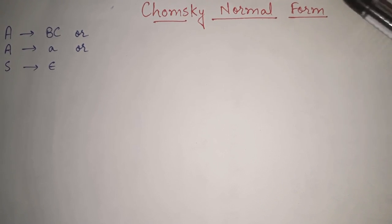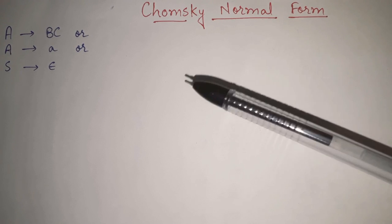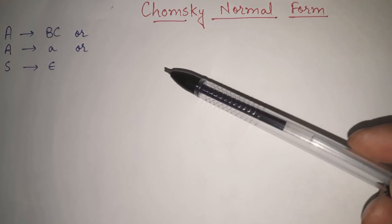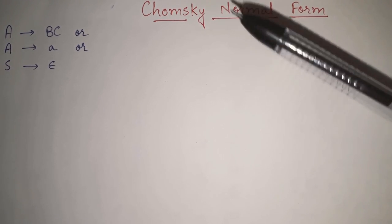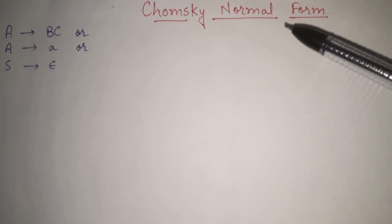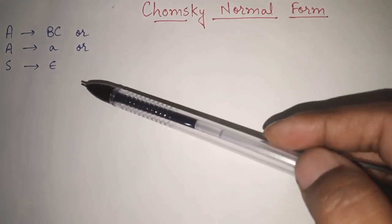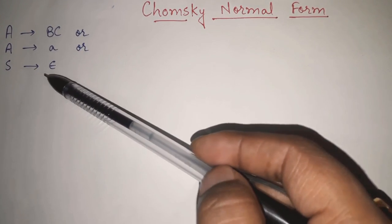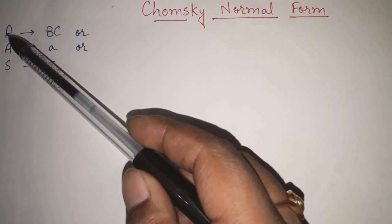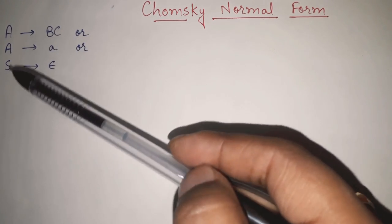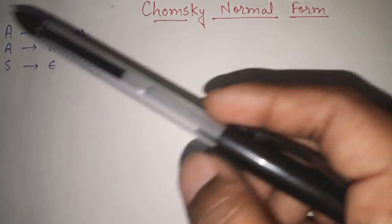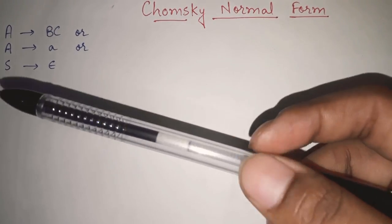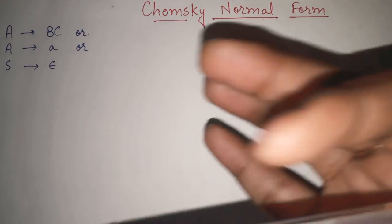We are going to see what is Chomsky normal form of any grammar and as per the hierarchy of Chomsky normal form, what are the different types of grammar and the different categories in which context free grammar can be categorized. Any context free grammar can be said to be in Chomsky normal form if all of its productions are in any of these forms: A gives BC, A gives small a, or S gives null where S is the starting symbol. Capital A, B, C are non-terminals or variables and small a is a terminal.